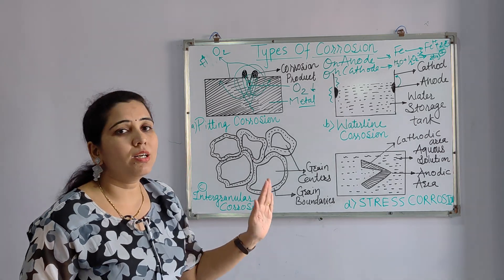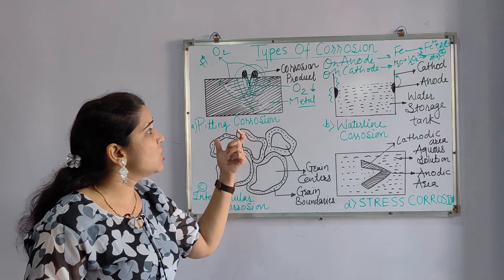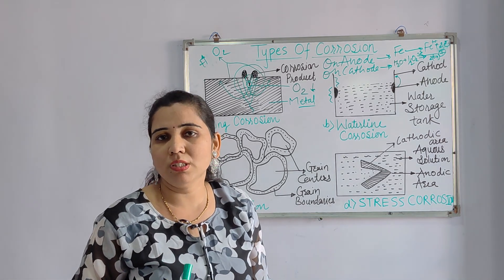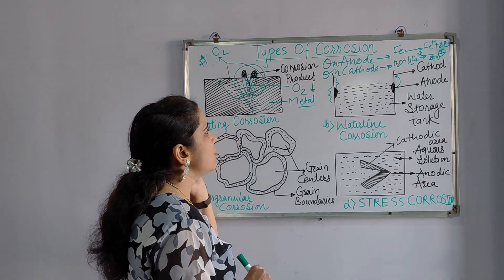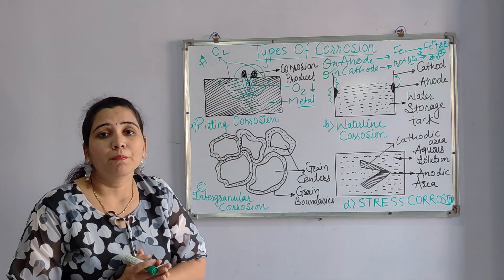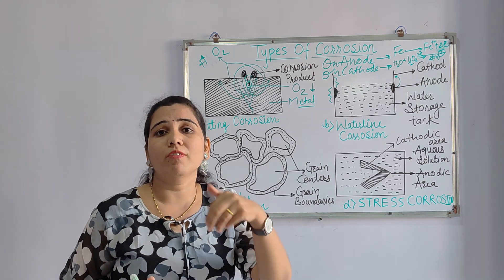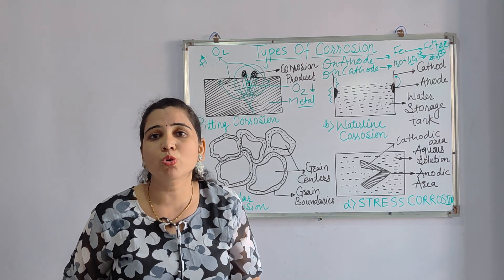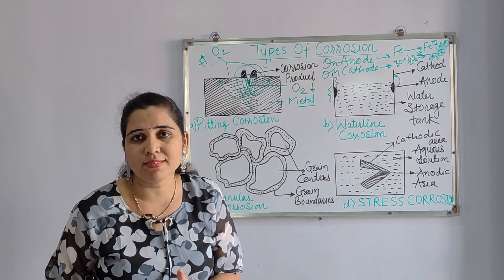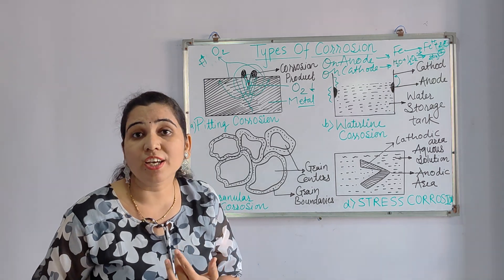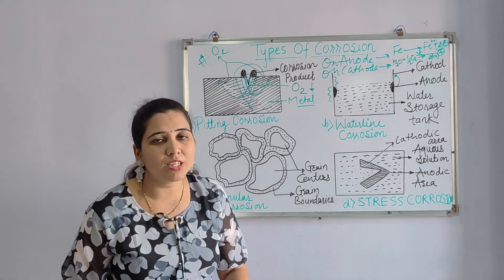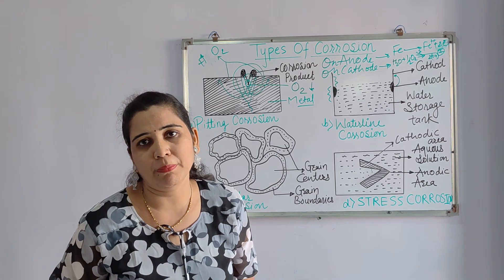In this way, we have seen all the types of corrosion today. Each type can be asked for three marks or more — 2.5 to 3 marks for each type. If you understood, great; if not, watch the video again and try to understand. If you have any questions, you can ask me or comment. If you like this video, press the like button and share it with friends who need it. Thank you very much, and stay tuned by hitting the bell button.